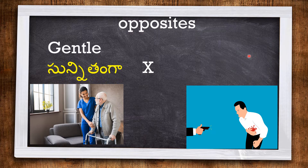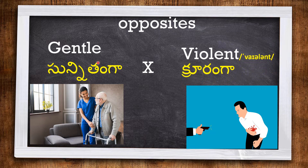The next one is GENTLE — this nurse is very gentle towards this old man. The opposite of GENTLE is VIOLENT. This man is killed violently, so the killing is a violent act.